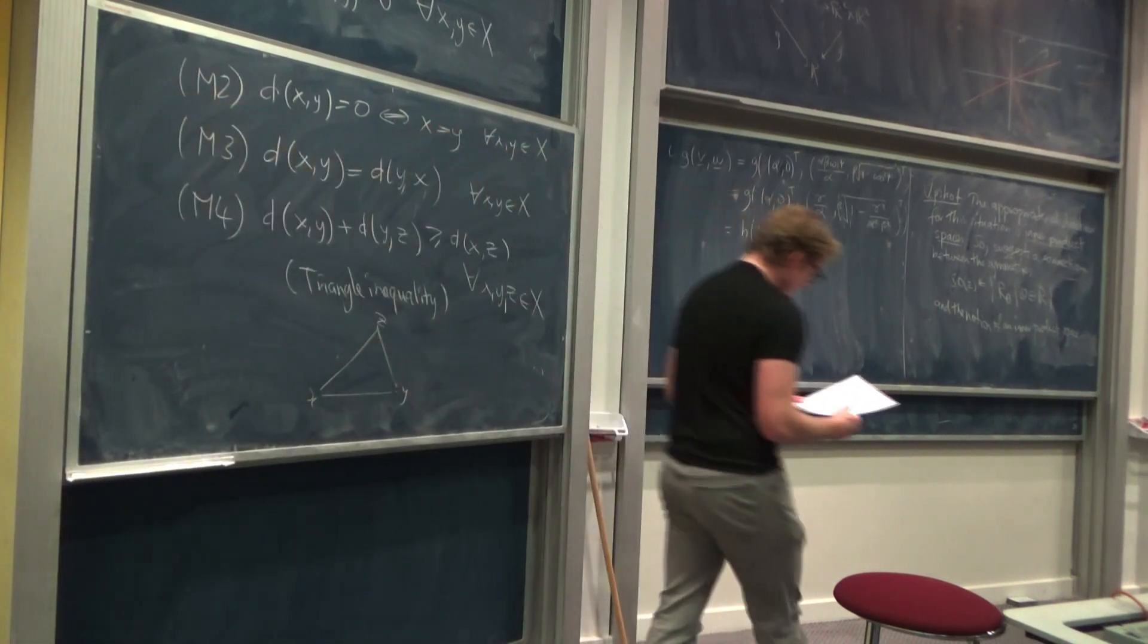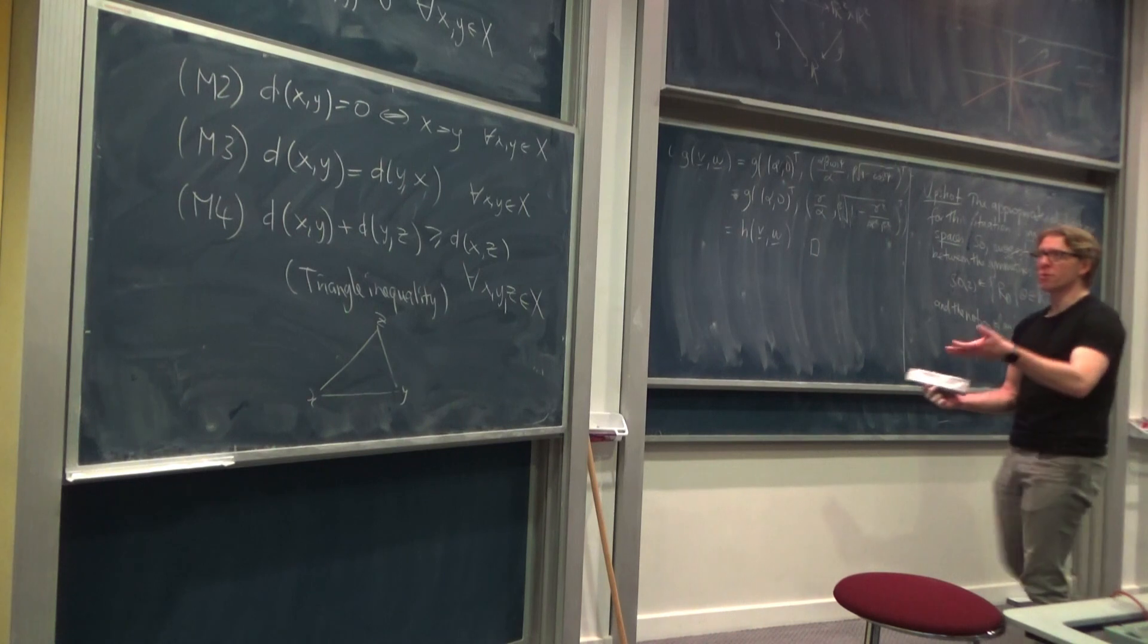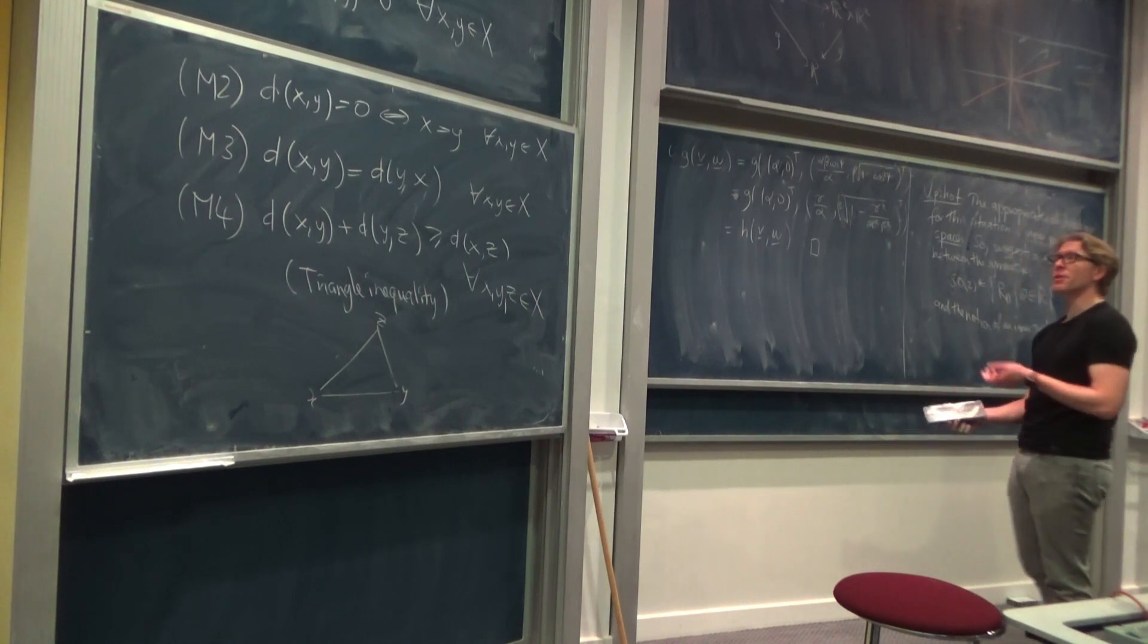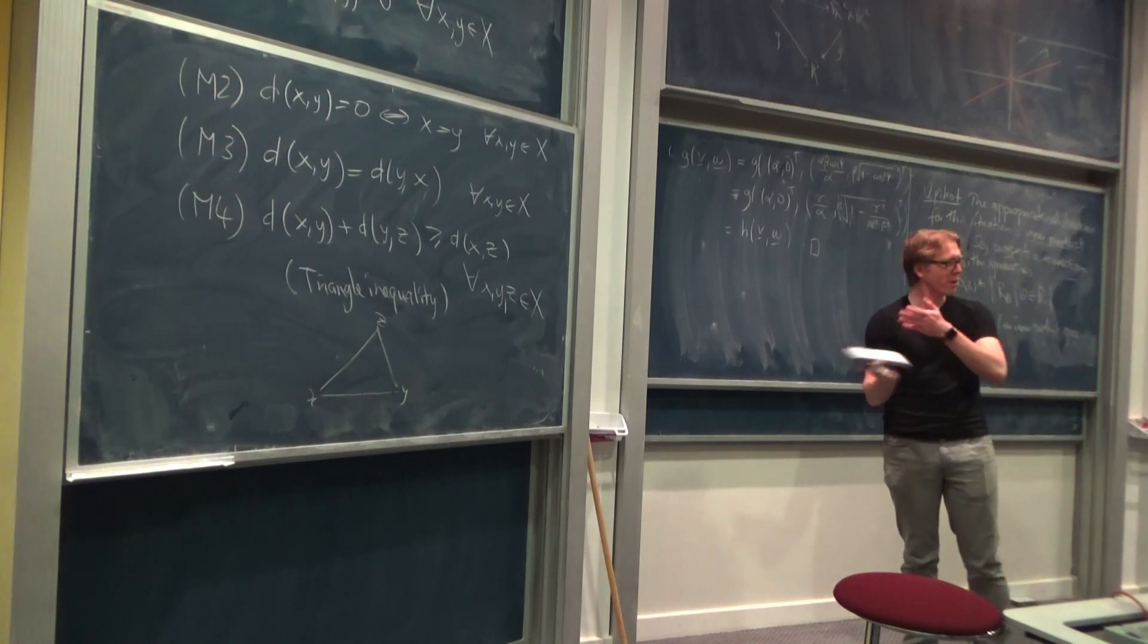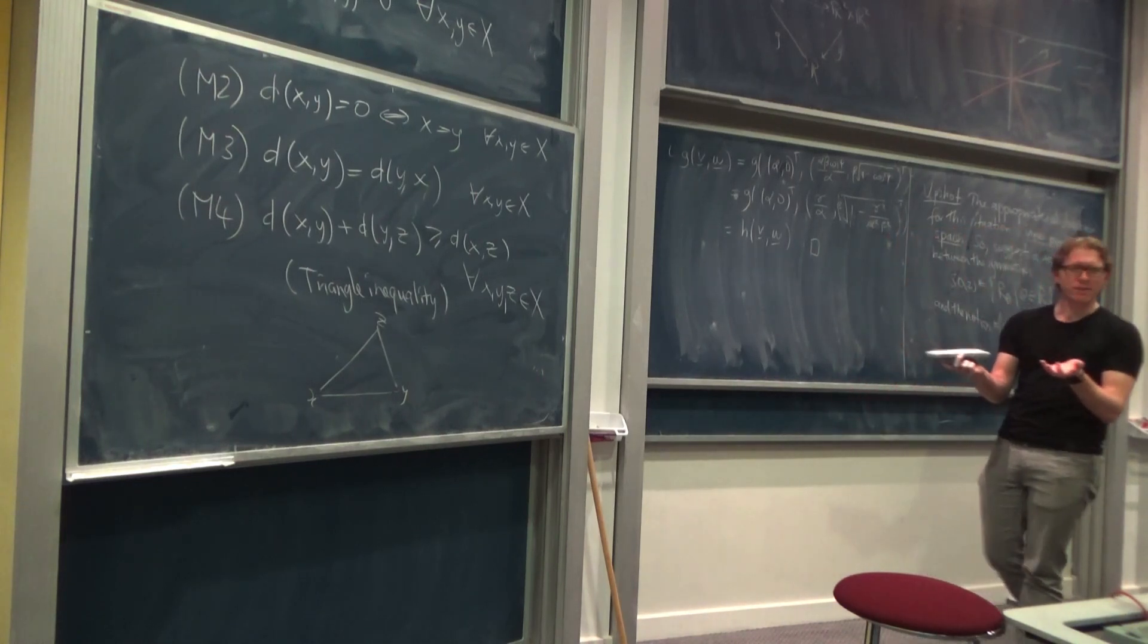It's fairly clear that R^n with the usual Euclidean distance satisfies those. It's just maybe M4 that we have to check, but most of you have seen the proof of that already. So we'll go through the details of proving R^n together with Euclidean distance as a metric space, but that's sort of a tautological example. That's why we cooked up the definition in the first place. More interesting question is, well, why these four axioms?